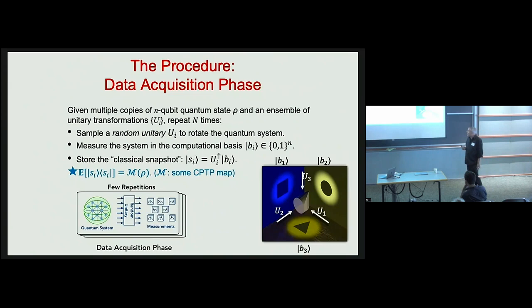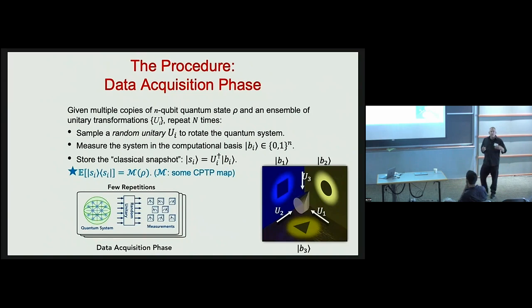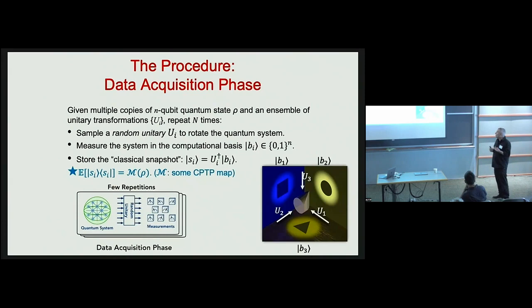For each copy of the quantum state we randomly select some unitary transformation from that ensemble and apply it to the unknown quantum state, then measure it in the computational basis. By applying the inverse of that unitary to the computational basis state yielded by that measurement, we get a snapshot of the state. If we average the snapshots over the choice of unitary and the measurement outcome, that defines a quantum channel — a completely positive trace-preserving map — acting on the input density operator.